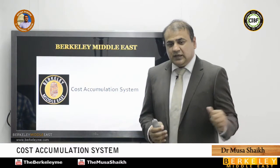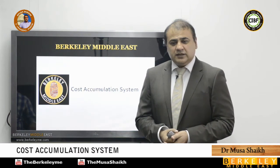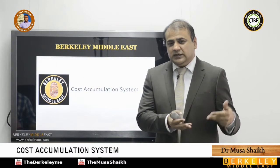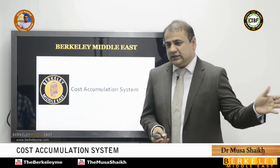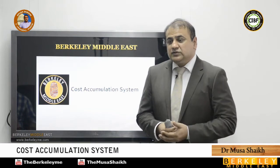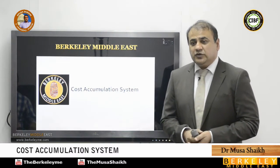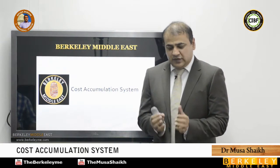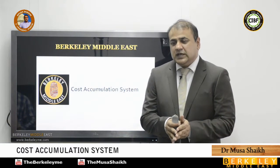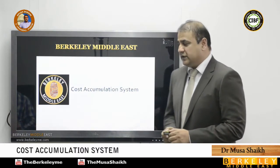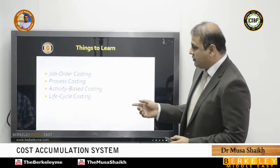For example, Nestle is buying milk and using it for chocolate, cookies, skim milk, dry milk, and other products. It can become really difficult to accumulate cost because you have common costs and split-off costs. This is what we will discuss today — how important it is to accumulate cost.